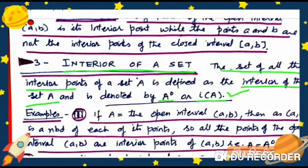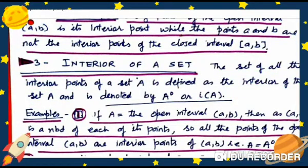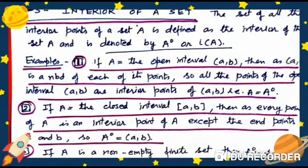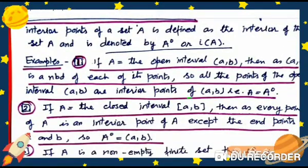Example 1: If A equals the open interval (a, b), then (a, b) is a neighborhood of each of its points. So all the points of the open interval (a, b) are interior points of A. Therefore the interior of A, i.e., A°, equals A — that is, A° = (a, b) = A.